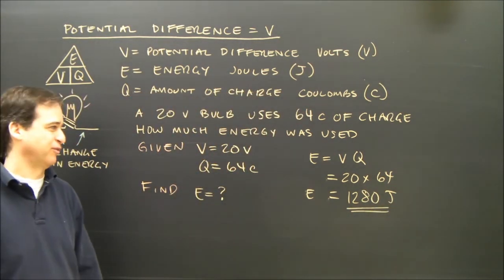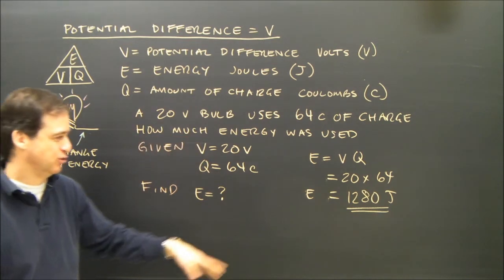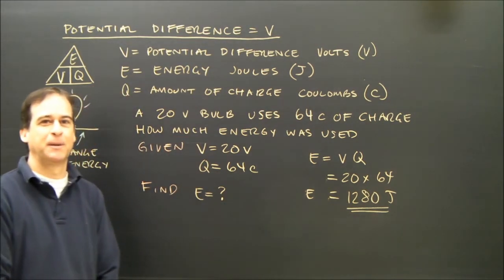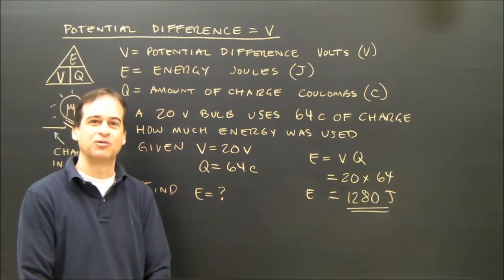And of course, maybe your teacher would like you to paraphrase that and say the amount of energy used was 1280 joules. Okay, let's go on to the next formula quickly in the next video. Thank you.